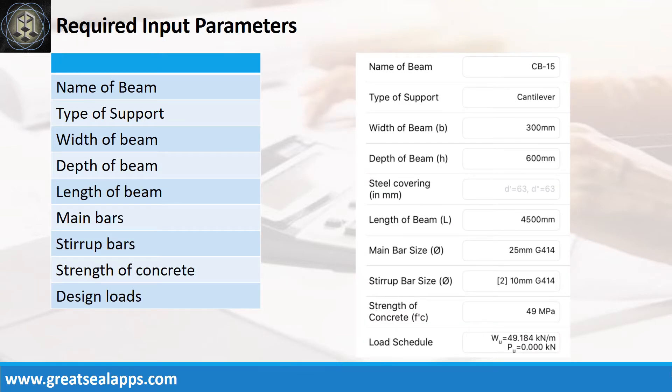Enumerate input parameters required. Name of beam, CB15. Type of support, cantilever. Width of beam, 300 mm. Depth of beam, 600 mm. Length of beam, 4500 mm.